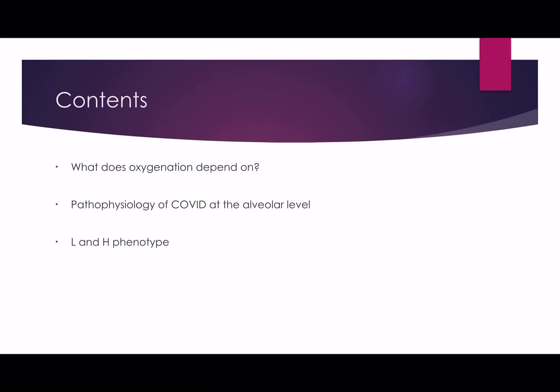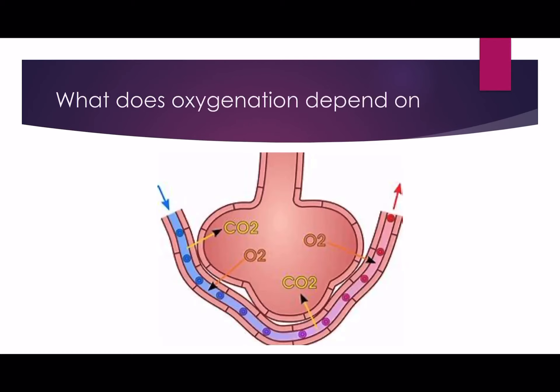In order to understand why COVID-19 patients may be hypoxic, it's worth thinking about what oxygenation depends upon. We'll talk about the pathophysiology of COVID-19 at the alveolar level and then discuss two specific phenotypes that seem to be delineating themselves in COVID pathology. Before these videos, it's really worth going through the basics of ventilation video series, which explains in more detail about the alveolar unit in oxygenation and CO2 removal.